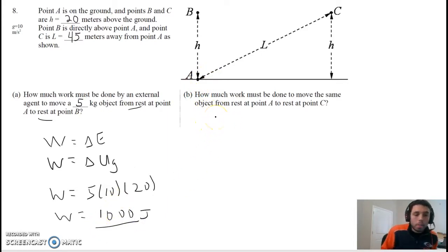Let's go to part B. How much work must be done to move the same object from rest at point A to rest at point C? The answer is 1,000 joules. This one has been troubling students because they think, well how can it be the same amount? Look how much further it's going. L is 45 meters, it's going 45 meters, not just 20 meters. Must there be more work being done on it to go farther? No.